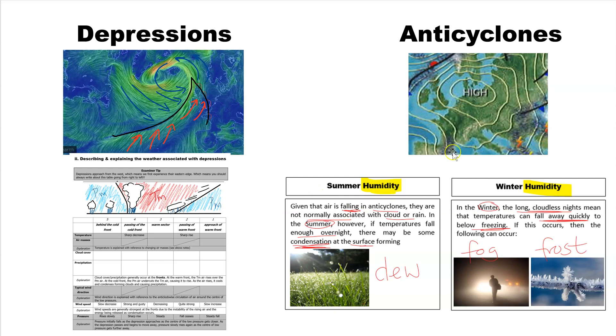The second difference in the summer and winter is in humidity. In humidity, you're not going to get clouds or rain in an anticyclone, but you will get morning dew very early in the morning in the summer. And the temperatures can fall away very, very quickly in the winter, giving you fog and frost.